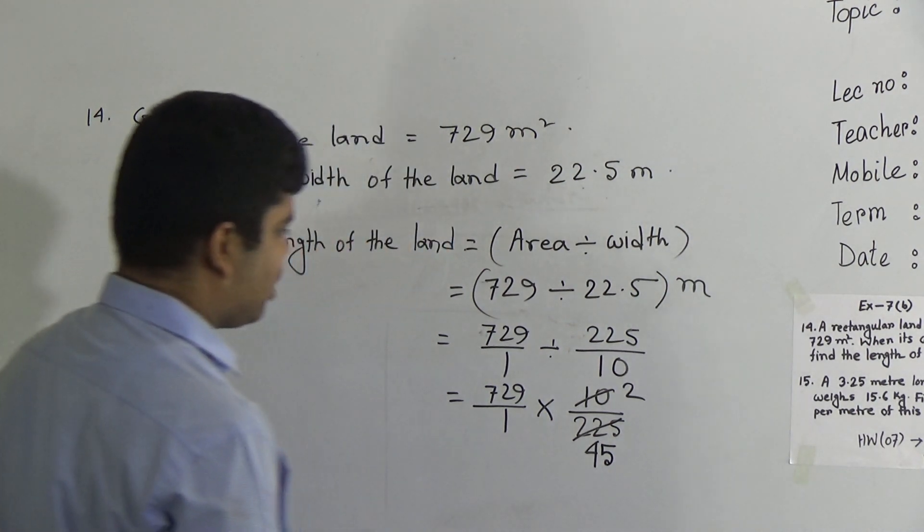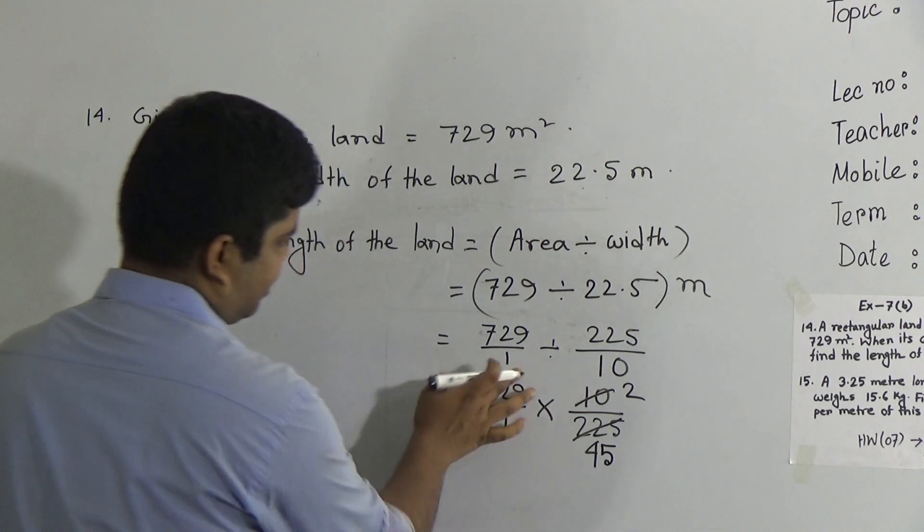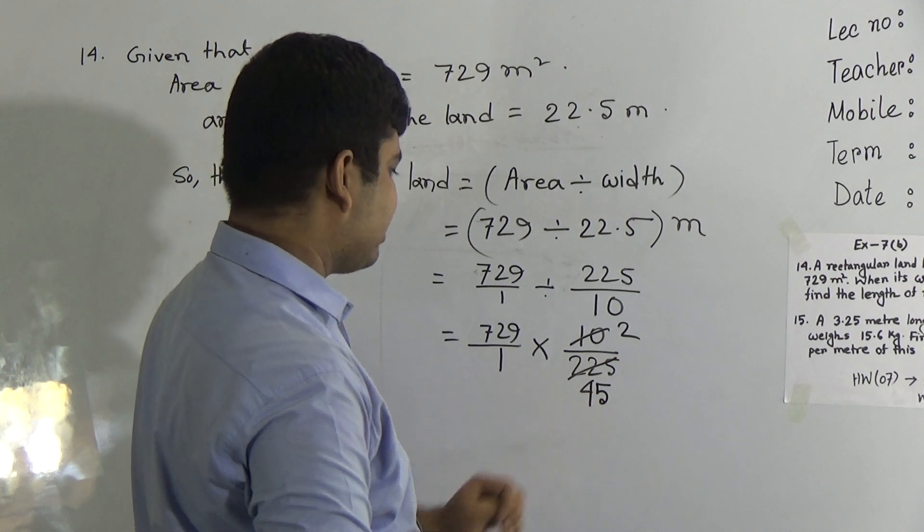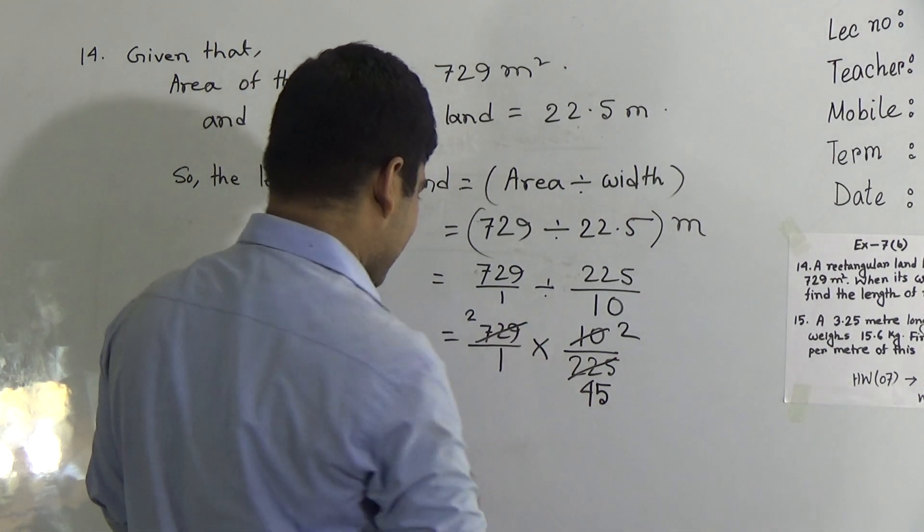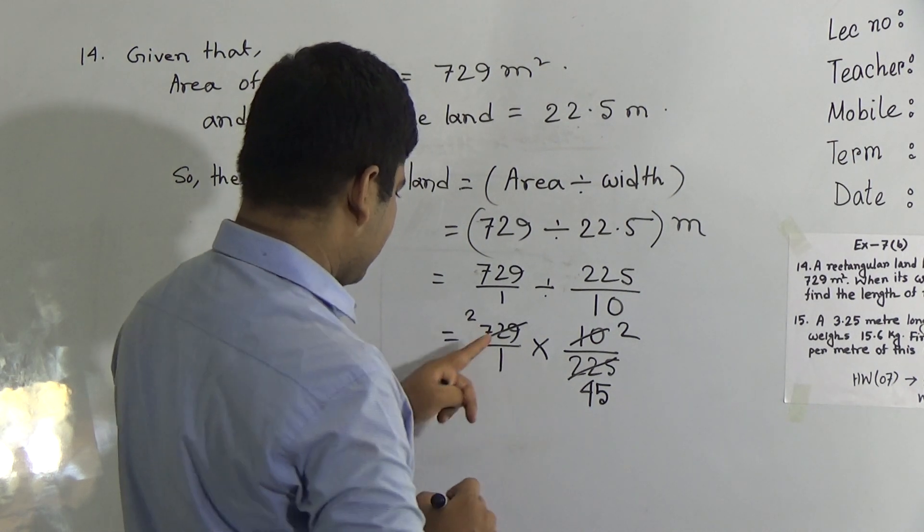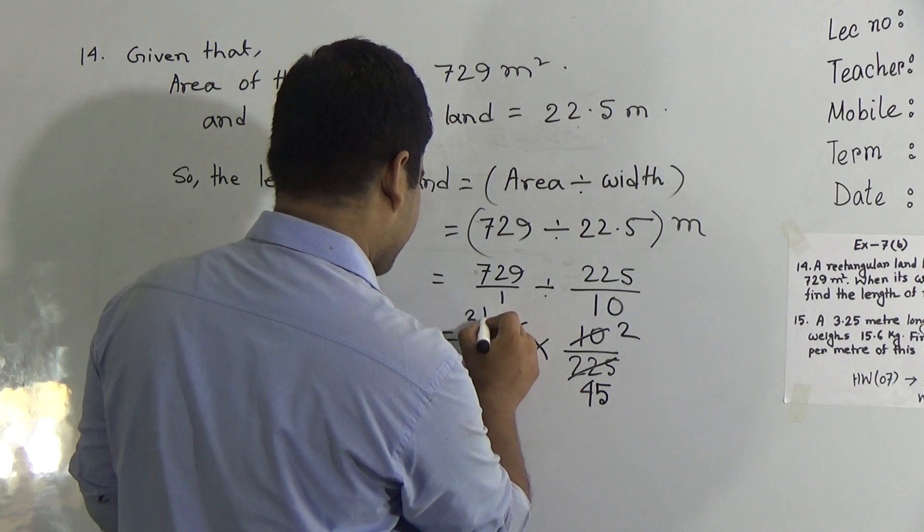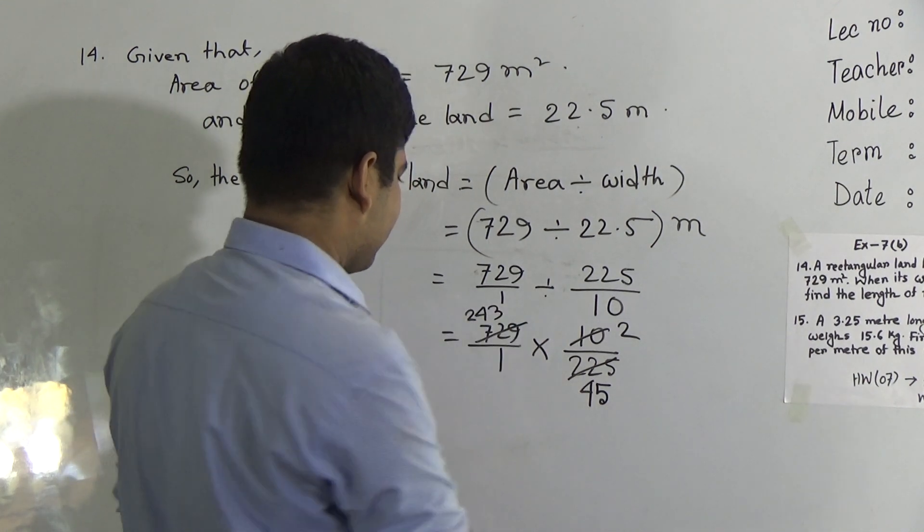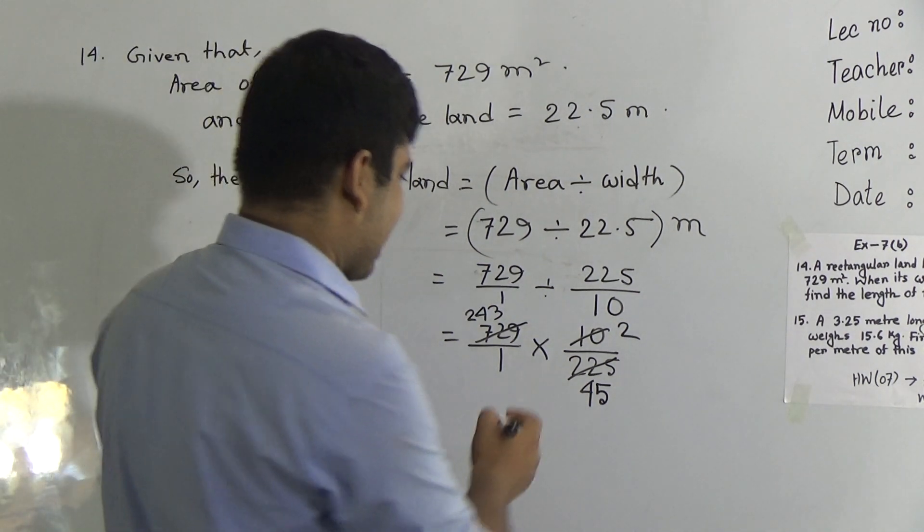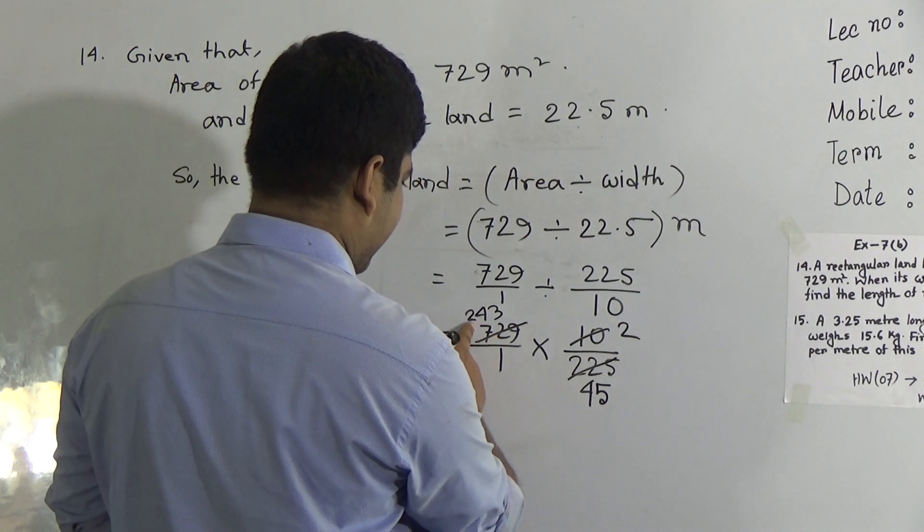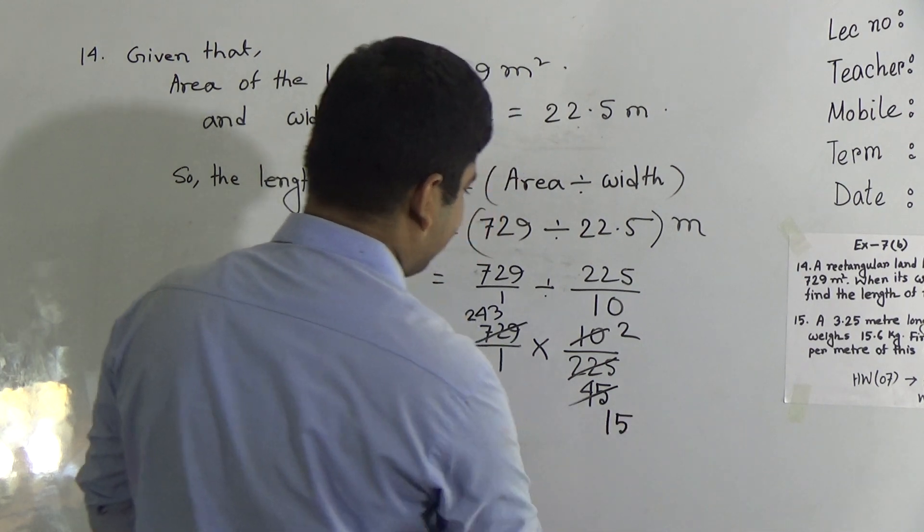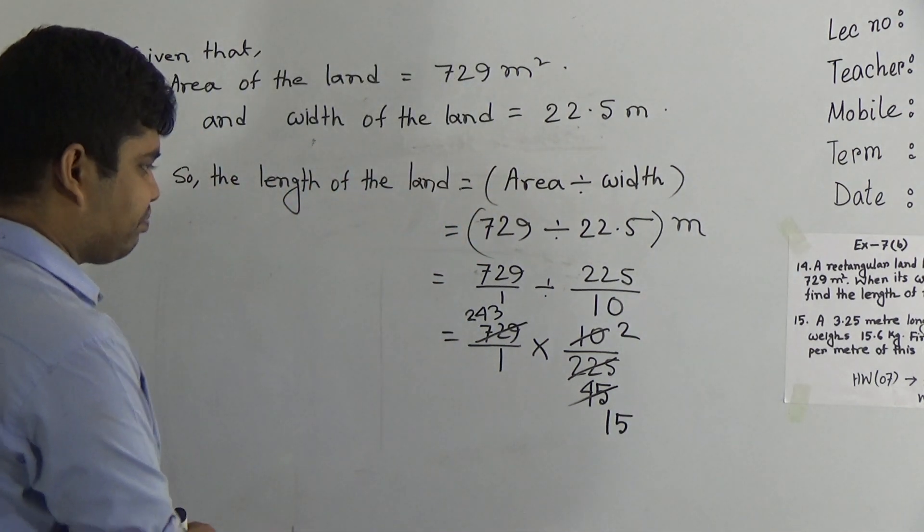I hope you have understood. Now we cut this 729 by 3 and also cut this 1 by 3. So 3 twos are 6, 3 twos are 6, carrying left 1, 12. In 12, 3 goes in 4 times. 3 fours are 12 and 3 threes are 9. Now as a numerator, this is cut by 3 and we get 243. Now this one is cut by 3 and we get 3 fifteens are 45.